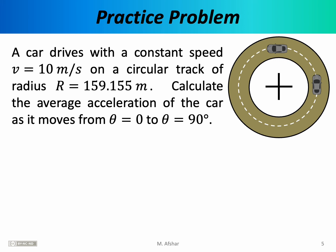We know the speed, which gives us the magnitude of each velocity vector. To find the direction, we remember the velocity vector is always tangent to the path. Since the path is circular, the initial velocity vector must point tangent to the circle at 0 degrees — that's in the positive y direction — with magnitude 10. The final velocity vector is also tangent to the circle at 90 degrees, and since the car travels counterclockwise, it points in the negative x direction, also with magnitude 10. These two vectors have the same magnitude but clearly different directions, so the velocity is changing and there is acceleration.